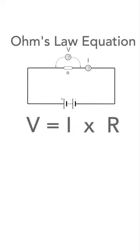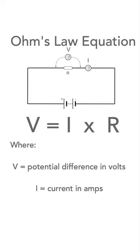This can be expressed mathematically as V equals I R, where V is the potential difference in volts, I is the current in amps, and R is the resistance in ohms.